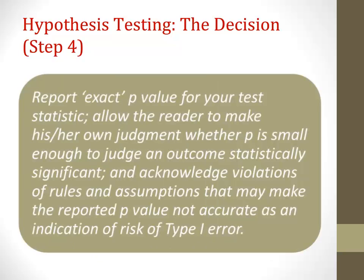In this fourth and final step of hypothesis testing — making the decision — we've talked about basing this decision on a p-value, setting an a priori significance level, comparing the p-value to the significance level, and deciding whether to reject or fail to reject the null hypothesis. It's also important to recognize the limits of the p-value. When conducting research, you'll likely use statistical software such as SPSS, and it's important to recognize the limits of both this software and the p-value it reports.